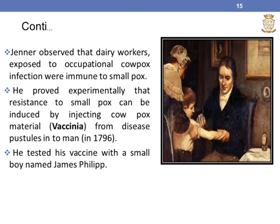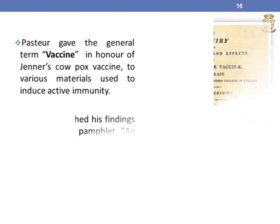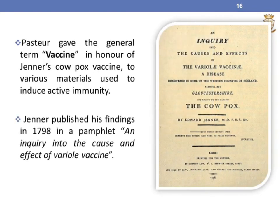In 1796, he tested his vaccine on a small boy named James Phipps. Pasteur gave the general term 'vaccine,' in honor of Jenner's corpus vaccine, to various materials used to induce active immunity. Jenner published his findings in 1798 in a pamphlet titled 'An Inquiry into the Causes and Effects of the Variolae Vaccinae.'